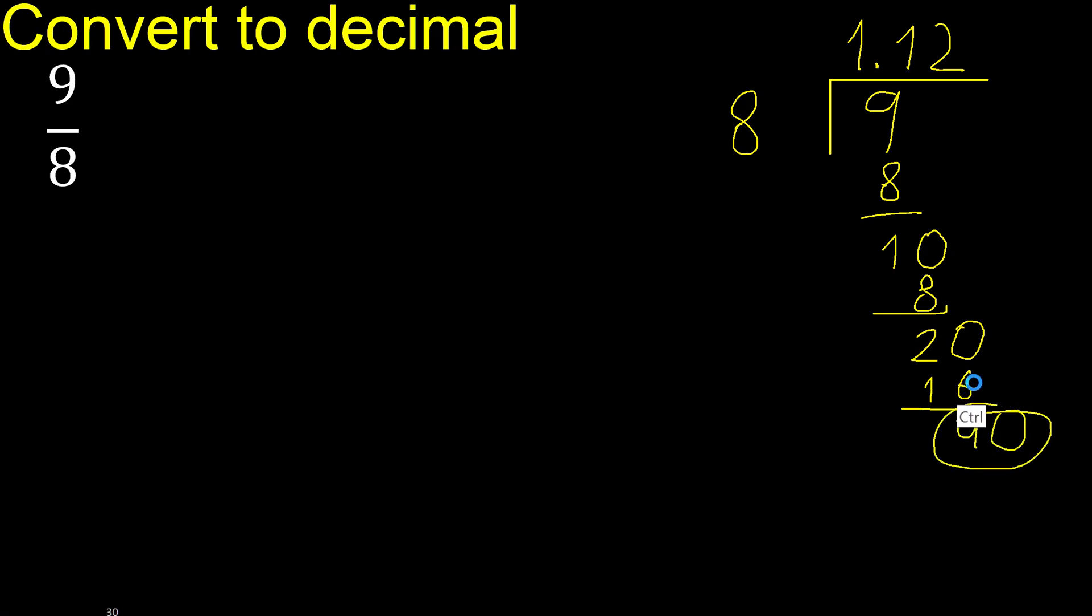Complete is 40. 8 multiplied by 5 is 40, subtract is 0, therefore finish.